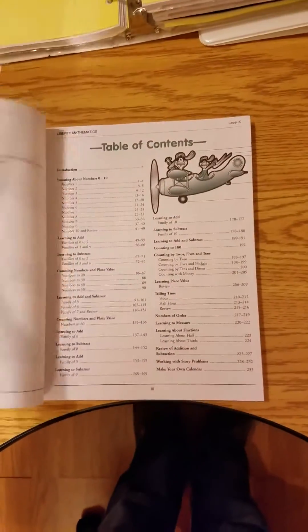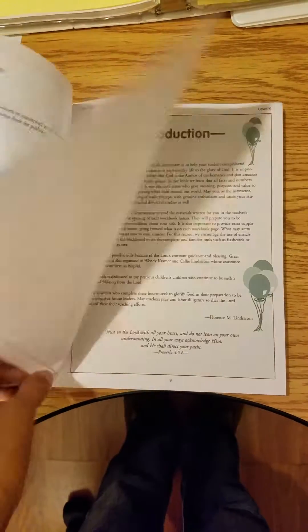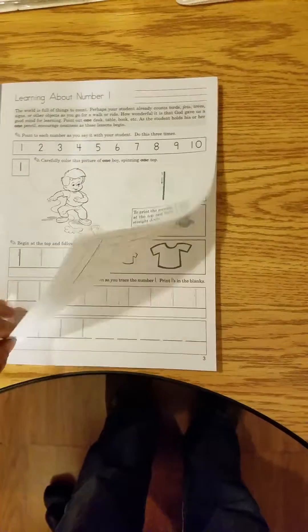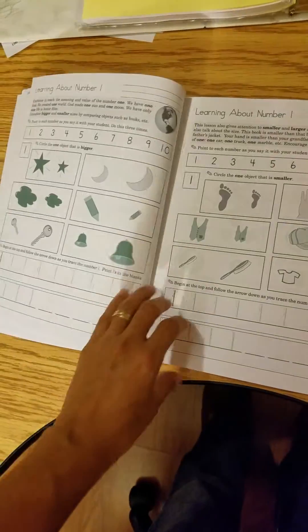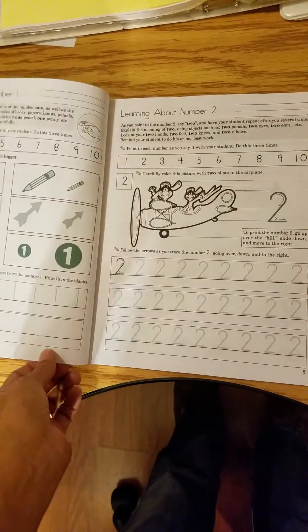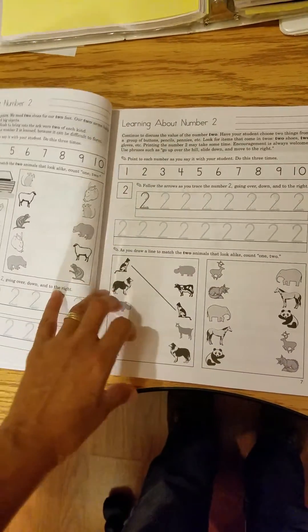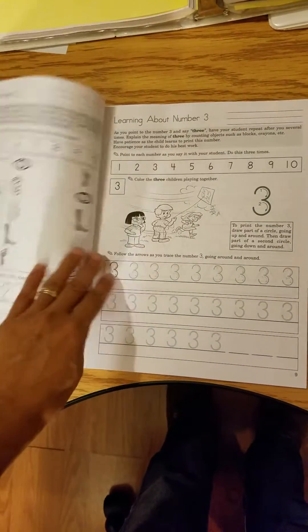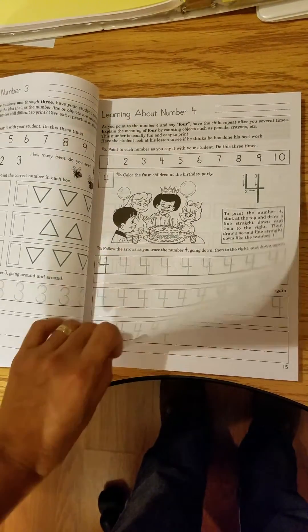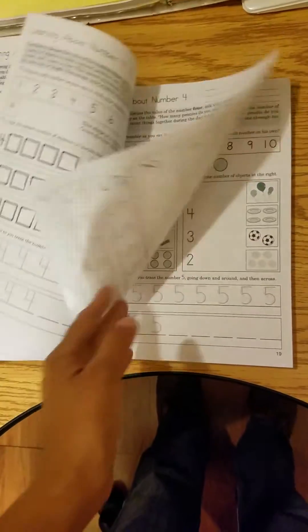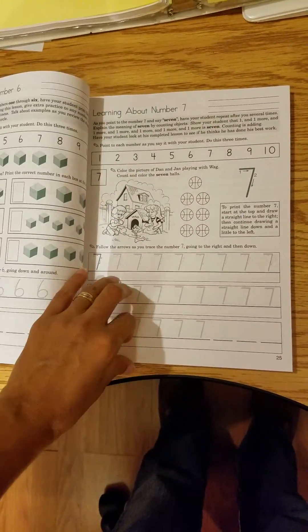Here's the kindergarten one. It starts with learning about number one, keeps on learning about one, goes on to two, plenty of practice on those. So it looks like each number gets thoroughly practiced.